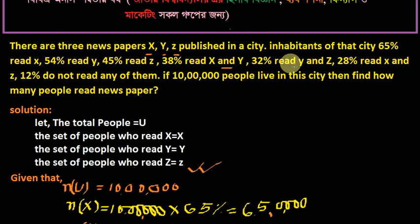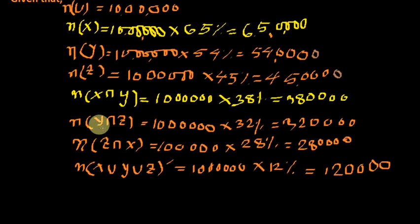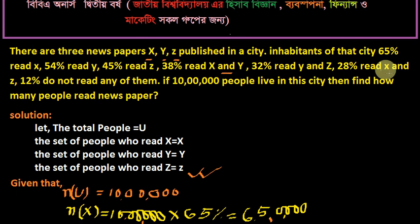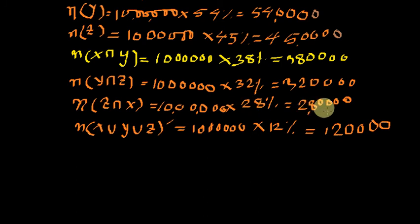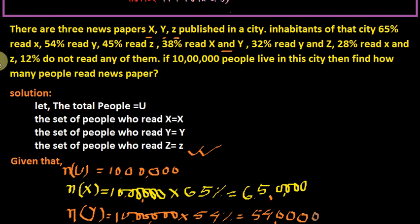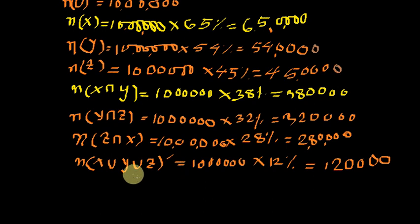So Y∩Z = 32%, X∩Z: x intersection z equal to 10 lakh people times 28%. And 12% don't read any of them, so the complement of X union Y union Z equals 12%. Therefore X union Y union Z equals 88%.